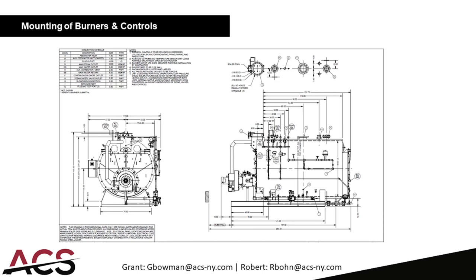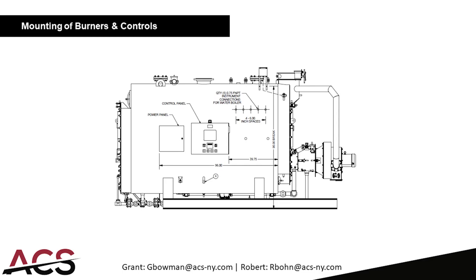You can also see the trim on the boiler — they have a probe-style water level and also a float, plus a continuous blowoff with controller. On the left side of the boiler there's a control panel and a power panel next to it, which takes in high voltage power and distributes 120V to the control panel and high voltage to the blower motor and air compressor if it's oil. It's good practice to bring the high voltage into a power panel rather than directly into the control panel, to avoid electrical noise.